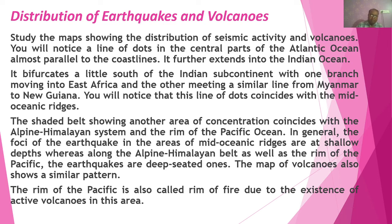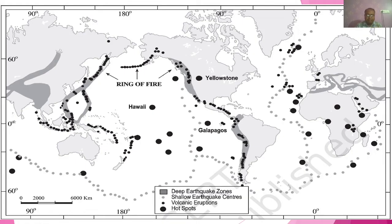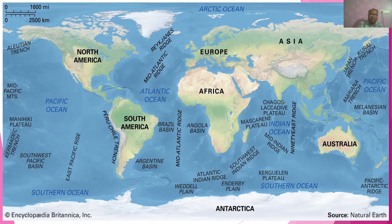Regarding distribution of earthquakes and volcanoes — this is the earthquake zone map. Deep earthquake zones are shaded in deep grayish color. Shallow earthquake centers are shown as grayish circles. Volcanic eruptions are shown as small black dots. The entire ridge system shows this kind of activity because ridges are very dynamic — growing and expanding. Volcanoes and hot spots can be seen. The mid-Atlantic ridge is visible, and the Peru-Chile trenches can also be seen. These are some of the important trenches and ridges shown in the diagram.